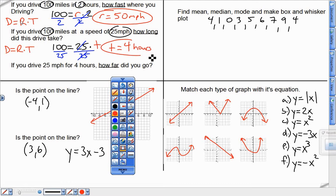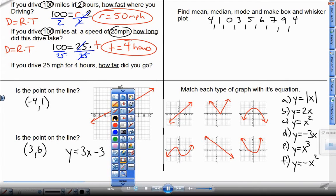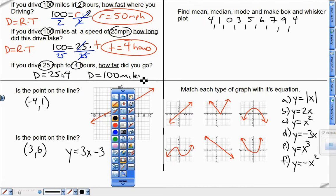Alright, next problem. If you drive 25 miles per hour, that is a rate. 4 hours is a time. So for this problem, I'm plugging in rate and time right away. I'm not having to do any algebra to solve. All I've got to do is multiply these two numbers together, and I get 100 miles from that.